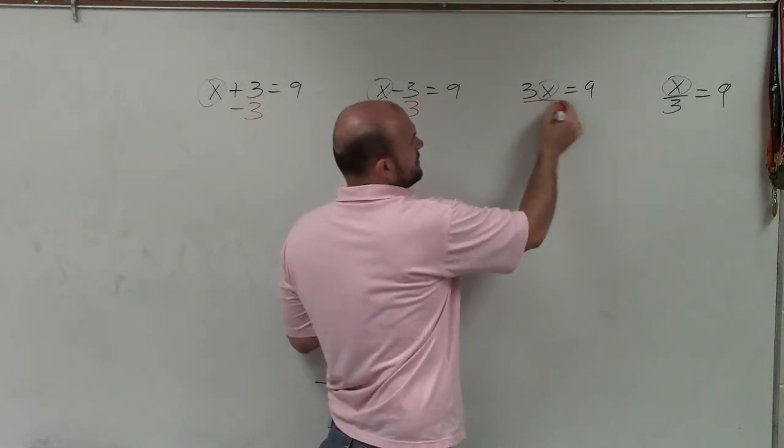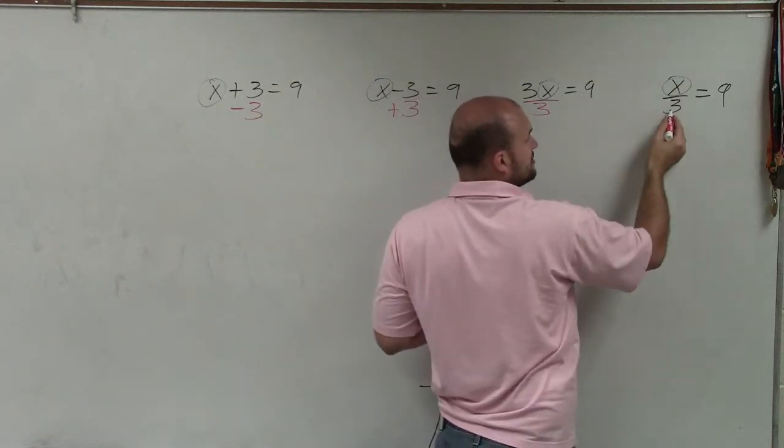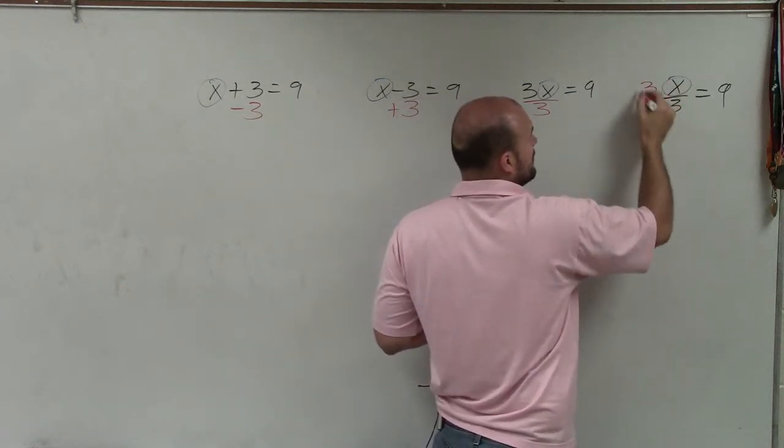Here, my variable is being multiplied by 3, so I need to divide by 3. And here, my variable is being divided by 3, so I need to multiply by 3.